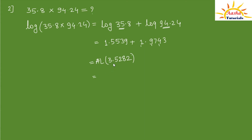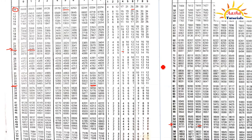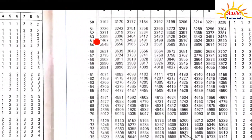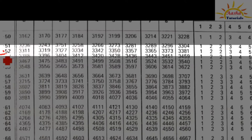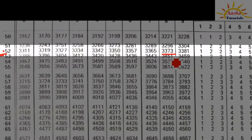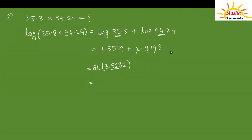We need to find the antilog of 3.5282. We find the antilog of 0.52 in the 8th column and mean difference from the 2nd column. The antilog of 0.52 in the 8th column is 3373, and the mean difference in the 2nd column is 2. Adding 2 gives 3375.